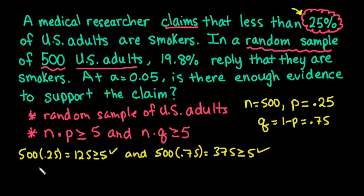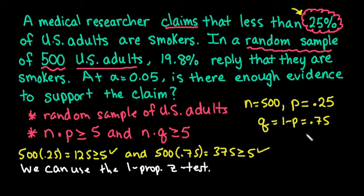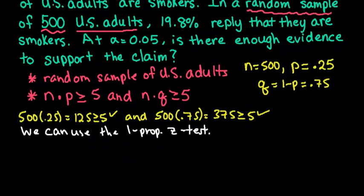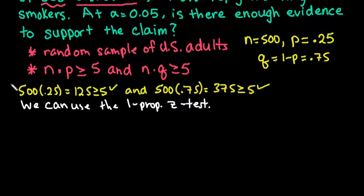The next step is to identify the name of the test. Just go ahead and write it down. So we can say that since the conditions are met, we can use the 1-proportion Z-test. And like I said, always reference the conditions that are used. I know that there's different texts that use different conditions.